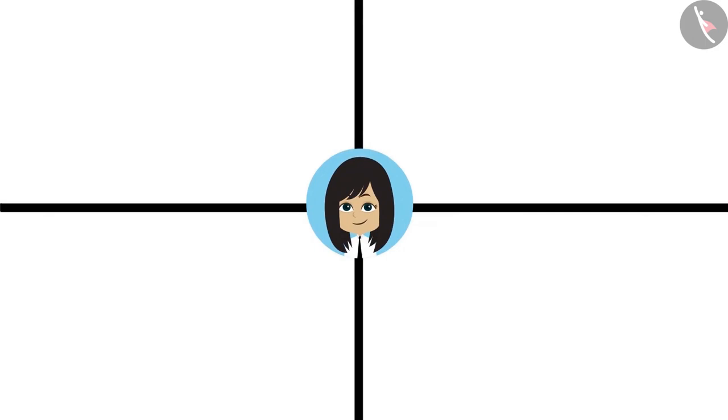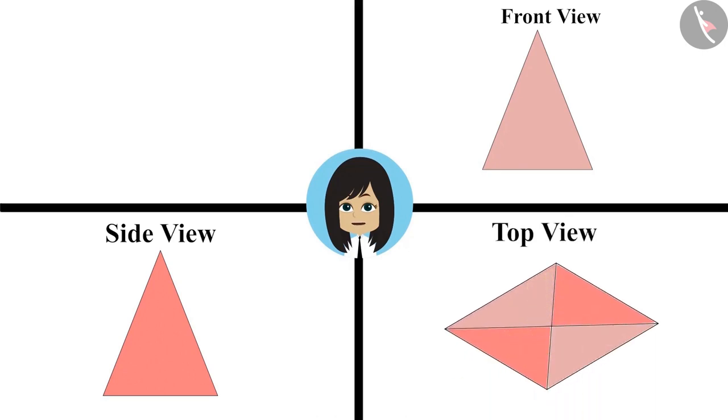Look at the front view of my drawing. This is a triangle. This is the side view of my drawing. This is also a triangle as before. And this is the top view of my drawing. What can this be?